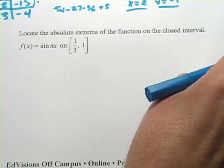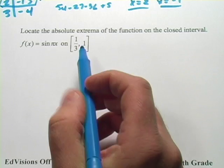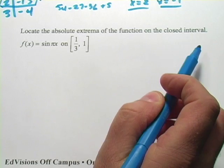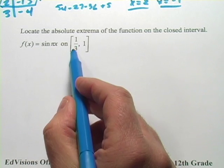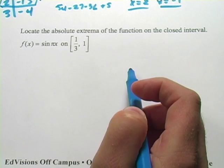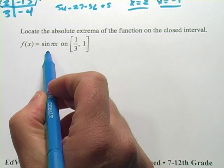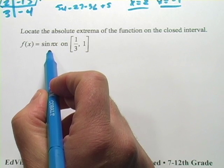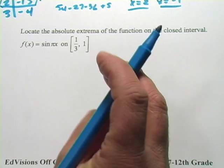Let's try one other one. This one uses a trigonometric function. It says, locate the absolute extrema of the function on the closed interval f(x) = sin(πx) on the interval from 1/3 to 1. So we want to find out, first of all, the zeros of the derivative of this function to find those maxima or minima.